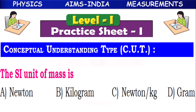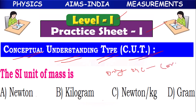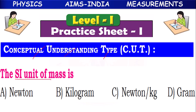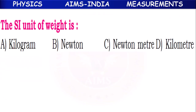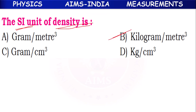Now let's solve IIT model questions based on this chapter — Level 1, Practice Sheet 1. The question type is Conceptual Understanding Type (CUT) questions. Each question has 4 options; only one option is correct (single correct answer type), carrying 3 marks each. SI unit of mass: kilogram. SI unit of weight: Newton. SI unit of density: kilogram per meter cube.